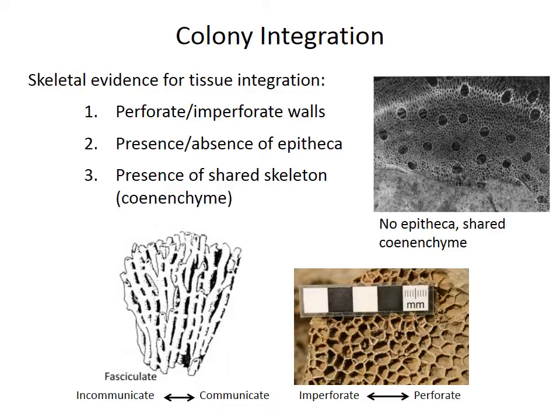If the walls that separate corallites have little holes in them — are perforate — then it suggests that there might have been some soft tissue connections between the individual polyps. An equivalent of that in the fasciculate forms would be communicate, where there are small cross branches that connect the tubes that may have had soft tissue.